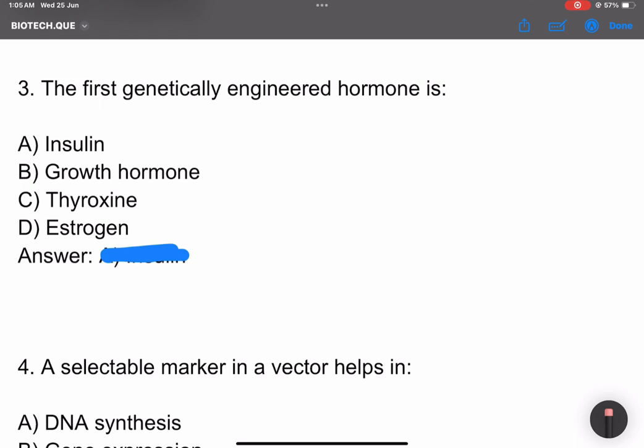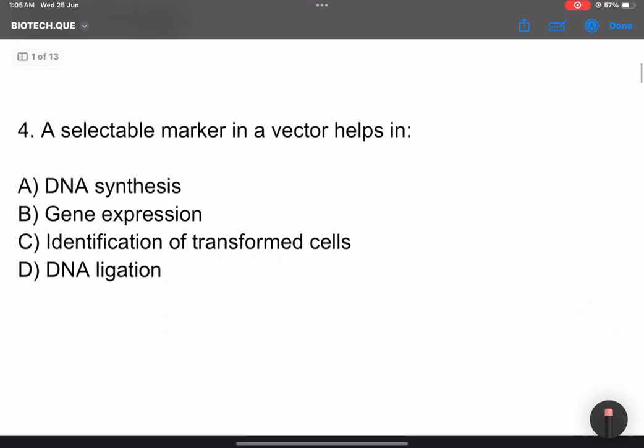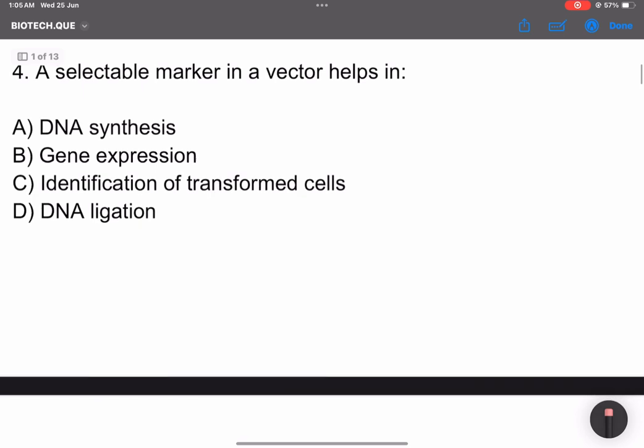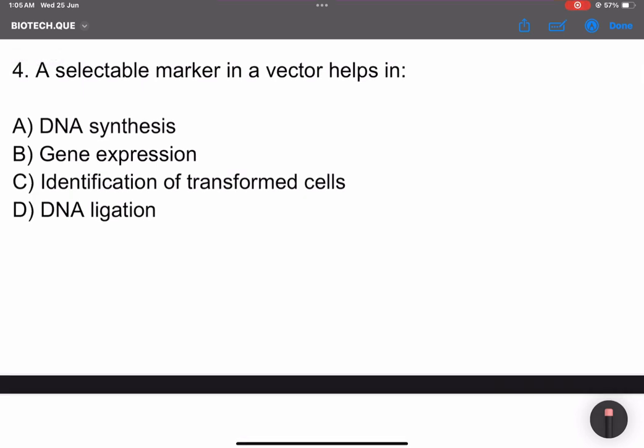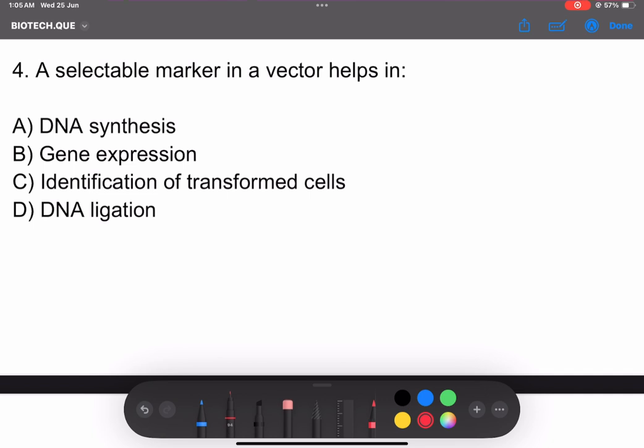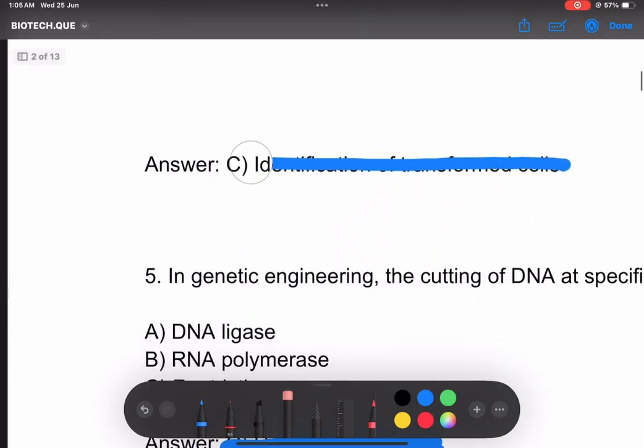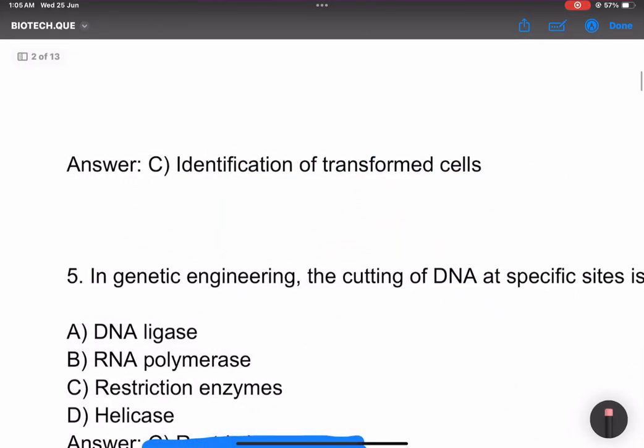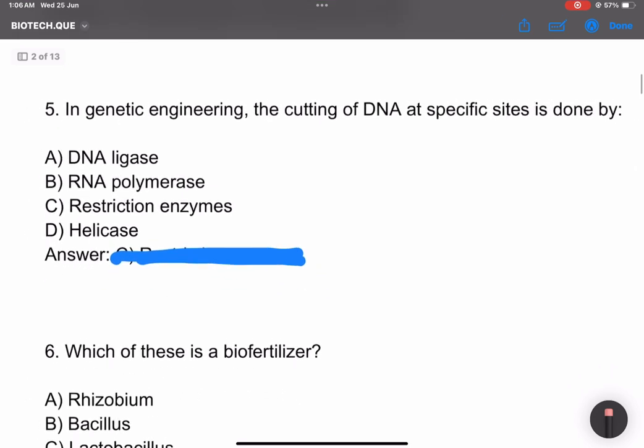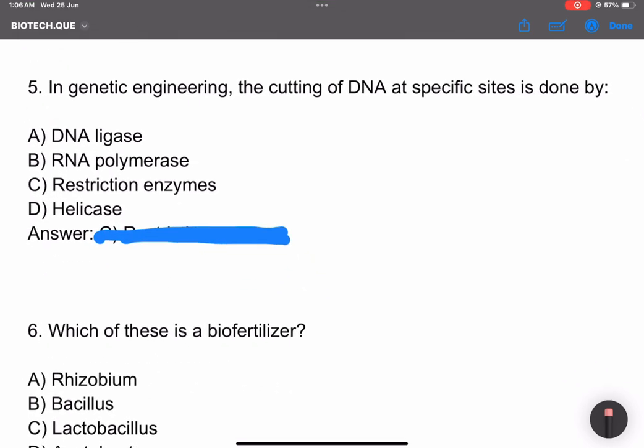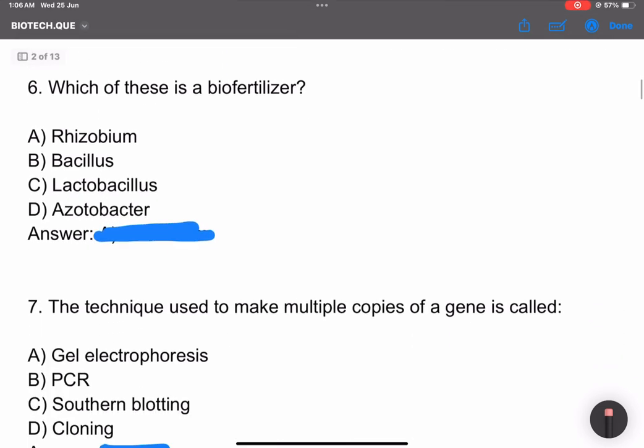Question 3: The first genetically engineered hormone is insulin. Selectable marker helps in selecting vector and distinguishing between transformed and non-transformed cells. Question 5: In genetic engineering, the cutting of DNA at specific sites is done by restriction enzymes.